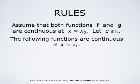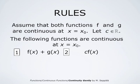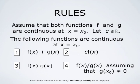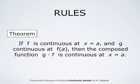If f and g are continuous functions at some point x₀, and c is a real number, then the following functions are also continuous at x equals x₀: f(x) plus g(x), c times f(x), f(x) times g(x), and f(x) divided by g(x) — assuming g(x₀) is not 0. More generally, if f is continuous at x equals a, and g is continuous at f(a), then the composed function g composed with f is continuous at x equals a.